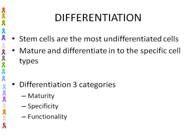Stem cells are the most undifferentiated cells in the body. They can become any type of cell — they are immature, potential tissues. From one stem cell you could get a breast cell, a bone cell, or a heart cell, depending on what's needed at the time. There are three categories: stem cells mature and grow up, they specify and develop into specific types of cells such as heart cells and bone cells, and they also function appropriately.